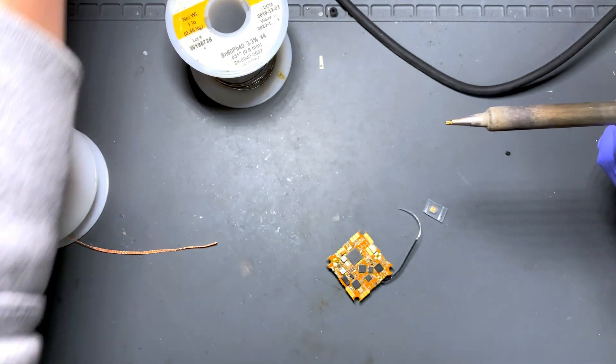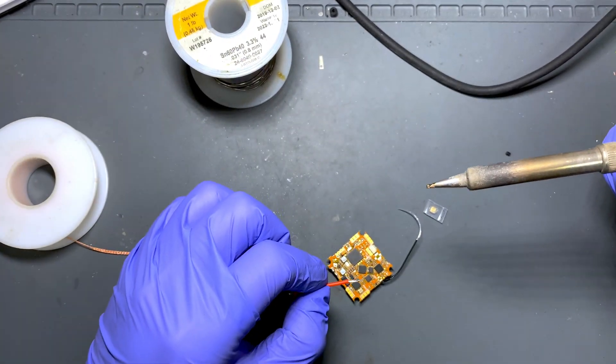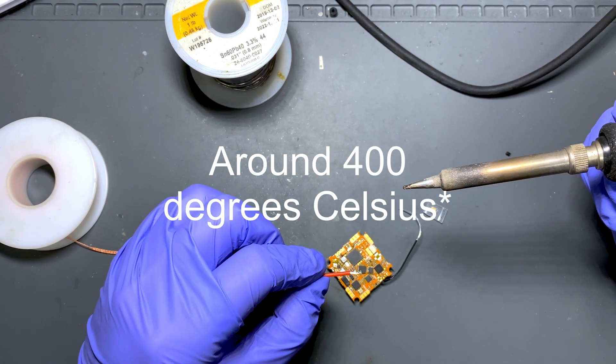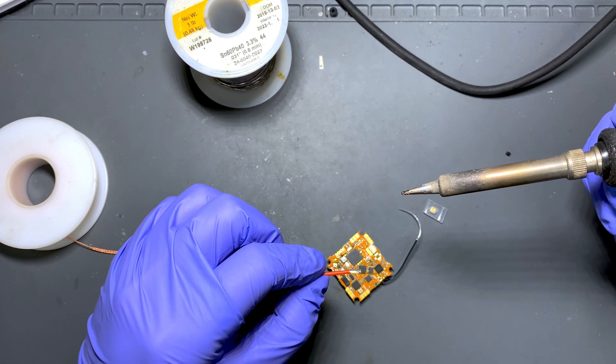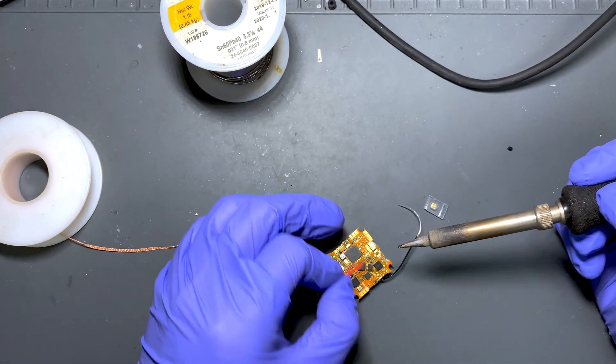Make sure your solder iron is set to a good temperature. I would say from my personal experience I set it up to 750 Fahrenheit. Let's take out the extra solder on the board.